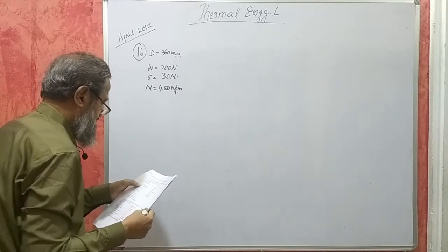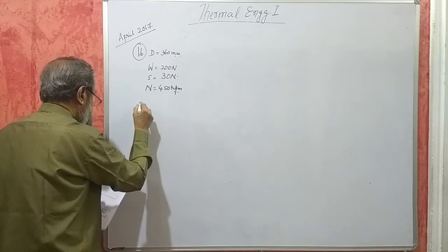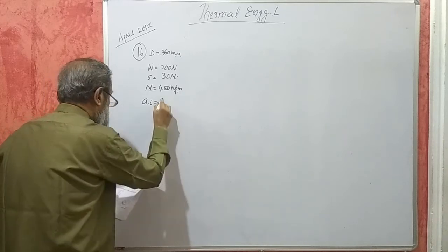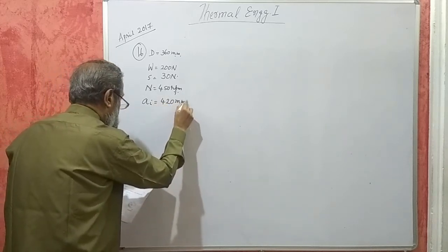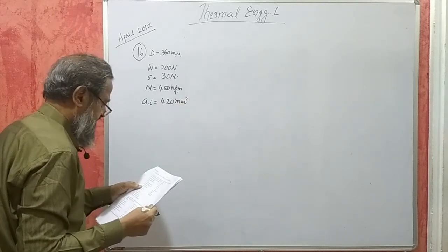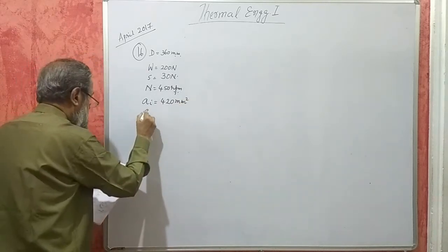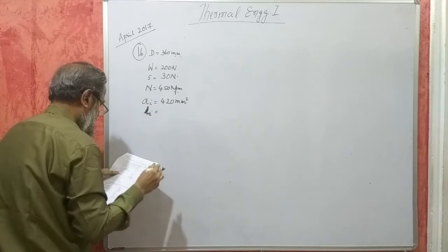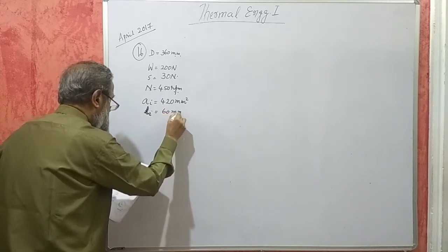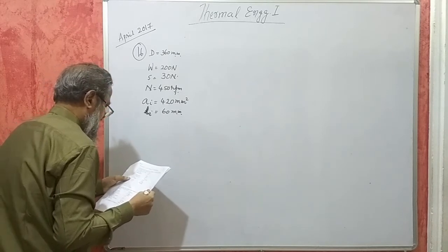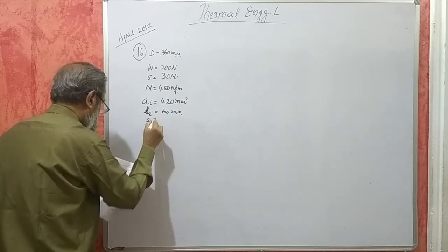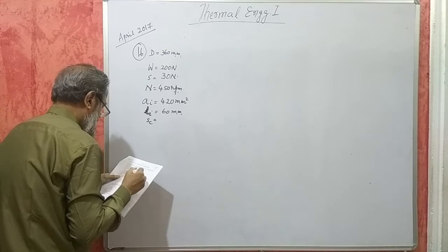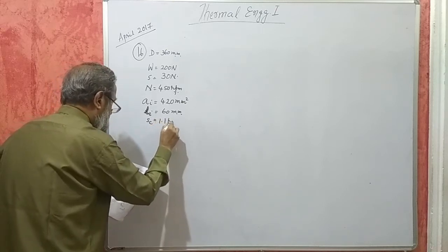Speed 450 rpm. Area of indicator diagram AI is 420 square mm. Length of indicator diagram LI is 60 mm. Spring scale SC is 1.1 bar per mm.